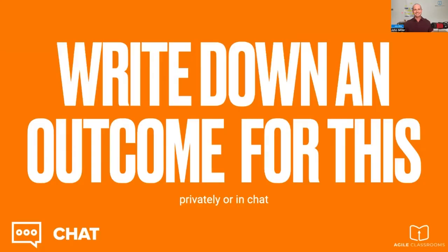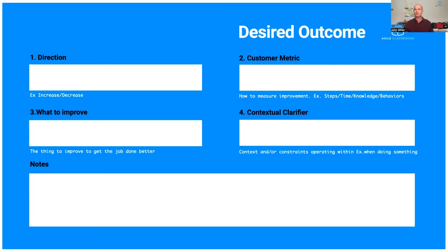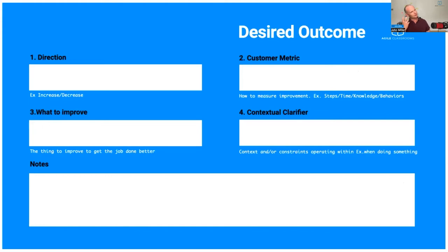I remember that commercial from '93. Think about that video — what are some outcomes that product is solving? Try using the format: direction, customer metric, what to improve — at least those three things. For example: increase my ability to multitask while having a call. Decrease the pain in my neck. Great outcome statements — even with a contextual clarifier.